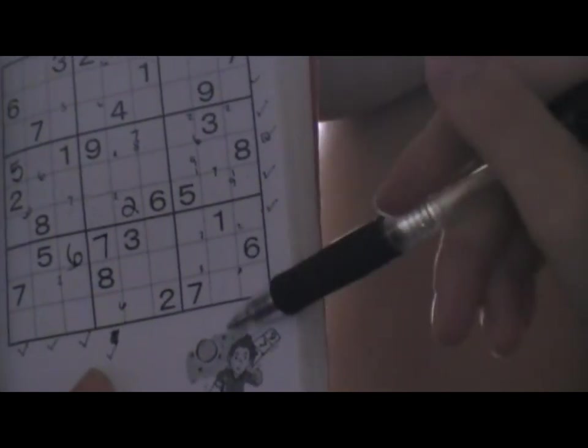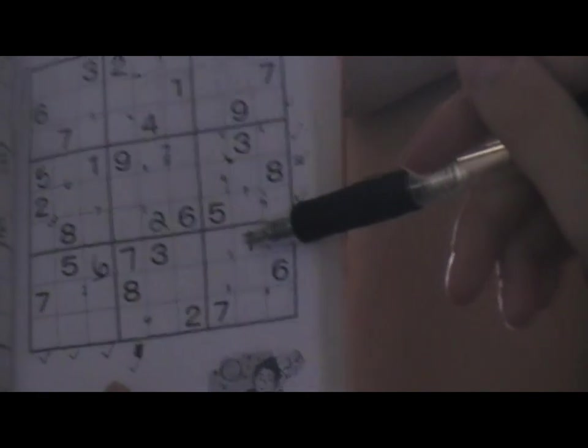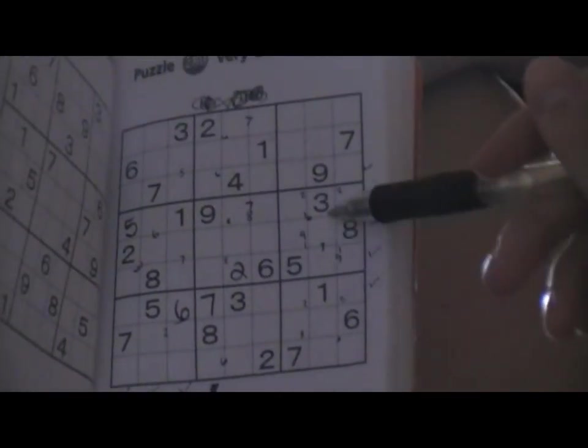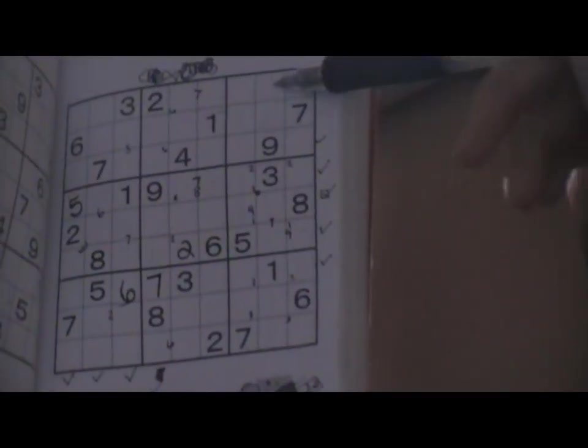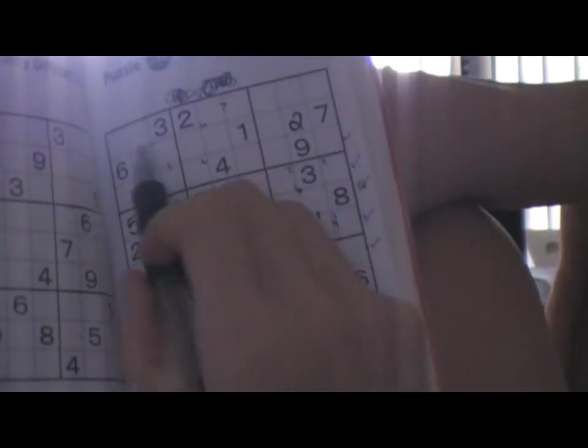In this column, the two can't be here or here or here. The two can't be here or here. And the two can't be there. So I found the two.